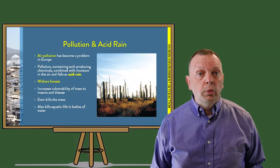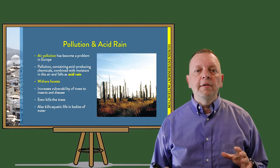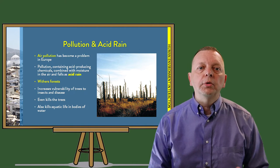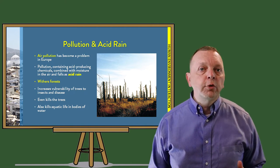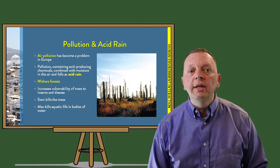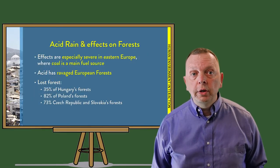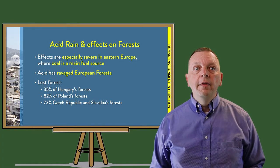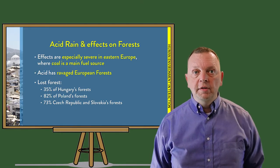Pollution has also been a major reason for the loss of so much of Europe's forests, because of factories and cars. Air pollution in Europe has become an issue for not only its people, but for its forests. The air pollution combines with moisture and falls down as acid rain. This acid rain then weathers the forest, making trees more vulnerable to insects and disease. After a while, the trees die off. Acid rain also runs off into rivers and lakes and can kill aquatic life. The effects are especially harsh in Eastern Europe, where coal is used more than any other forms of energy, and thus the forests there have been most affected.